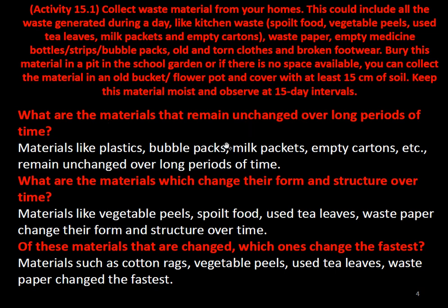What are the materials that remain unchanged over a long period of time? That is plastic, bubble packs, milk packets, empty cartons, etc. They remain unchanged — they will remain as they are for a long period of time. But there are perishable goods that will change during the course of time, for example vegetable peels, spoiled food, tea waste, and paper — all those change their form.